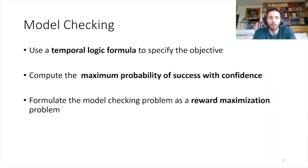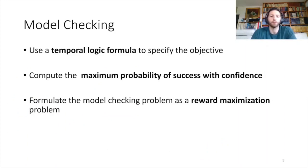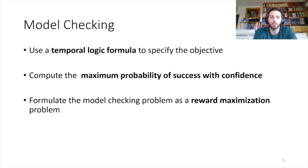The problem of model checking is slightly different. In model checking, we do not want to use a reward function but instead rely on a temporal logic formula to specify the objective. And instead of just computing the behavior, we're also interested in computing the maximum probability of success with confidence — it's important to know when our agent is going to perform well. By formulating this model checking problem as a reward maximization problem, we can build a state-of-the-art model checking library upon the POMDPs.jl ecosystem and benefit from all the existing solvers.